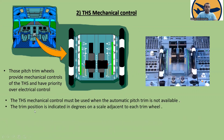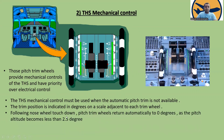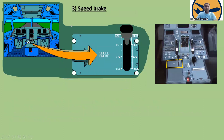The trim position is indicated in degrees on the scale adjacent to each trim wheel. Following nose wheel touchdown, the pitch trim wheels return automatically to 0 degrees as the pitch attitude becomes less than 2.5 degrees.